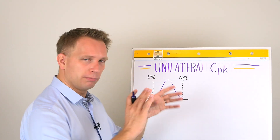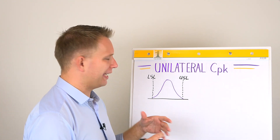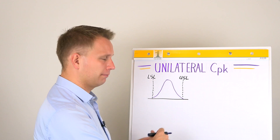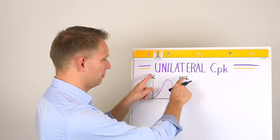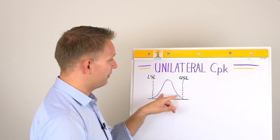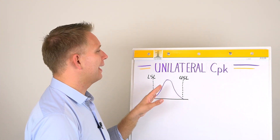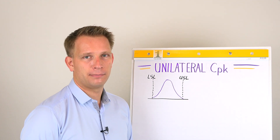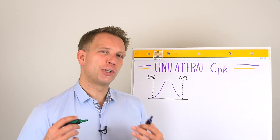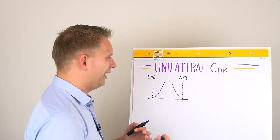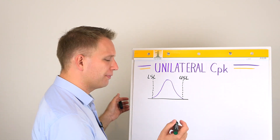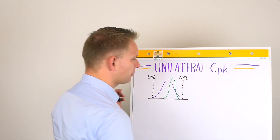That means the normal 99-and-a-bit percent of your distribution fits exactly within your limits — one bell curve fits within these limits and it is nicely in the center. Now let's also draw a pretty good but not fully centered process to see how CPK and CP will differ.